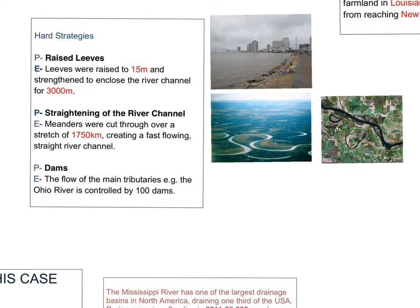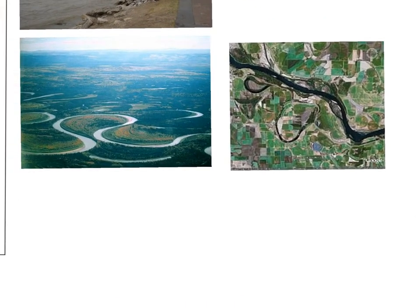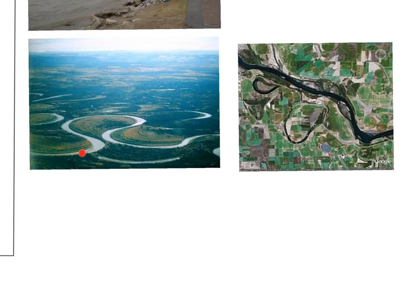The next hard engineering strategy is straightening the river channel. Within the Mississippi, this was done for over 1,750 kilometres, creating a fast-flowing straight channel. The picture on the left shows a series of tight meanders; the picture on the right shows these meanders have been cut through and the channel straightened. This prevents erosion on the outside of curves and deposition on the inside, but creates faster river speeds and could lead to problems further downstream.